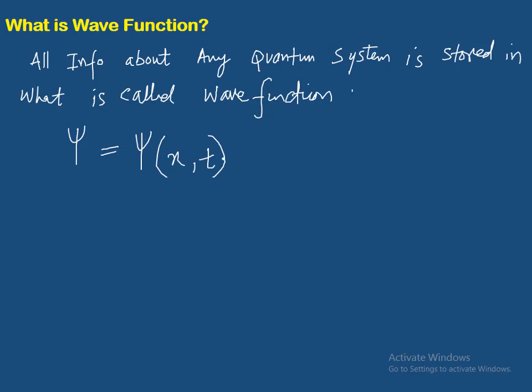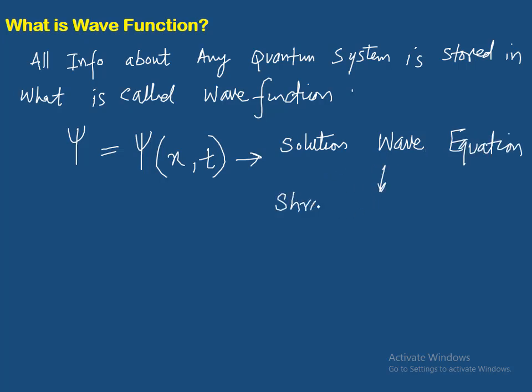Wave function space aur time ka function hota hai. Ab sawal ye ki is wave function ko wave function kyon kehte hain? Kyunki ye wave function jo hai, wo solution hai ek khas wave equation ka — us wave equation ka naam hai Schrödinger equation.